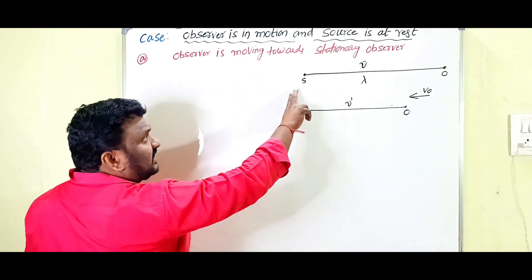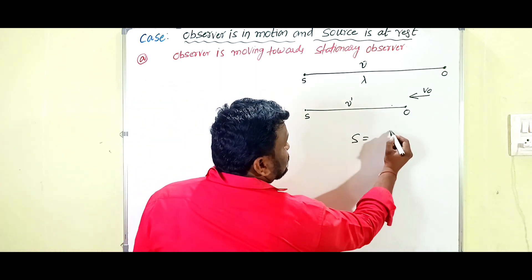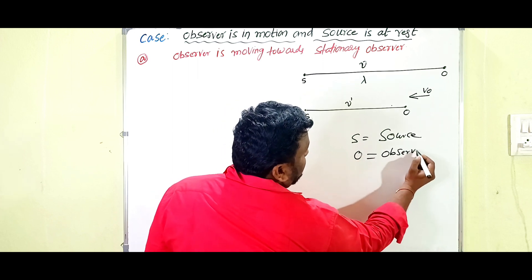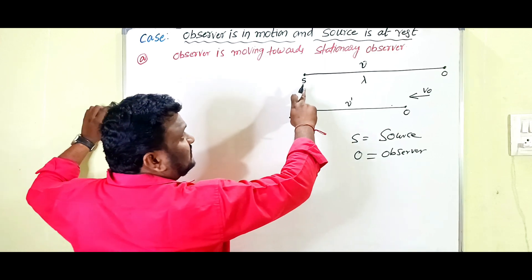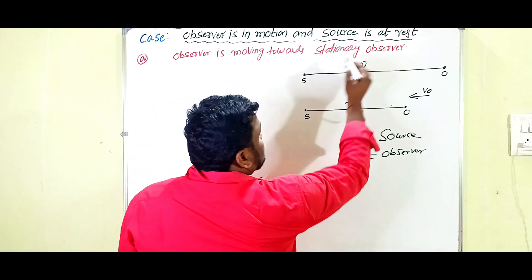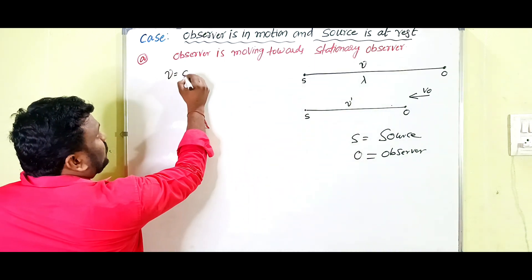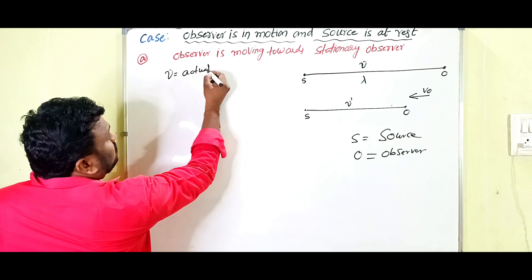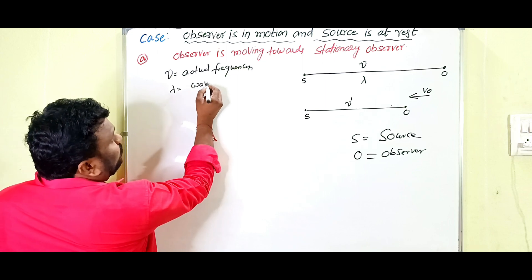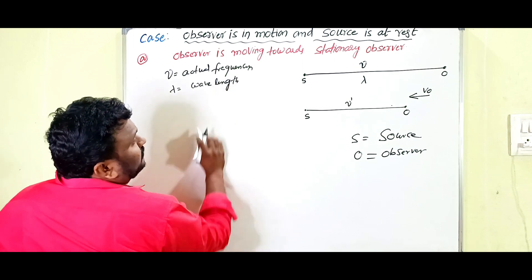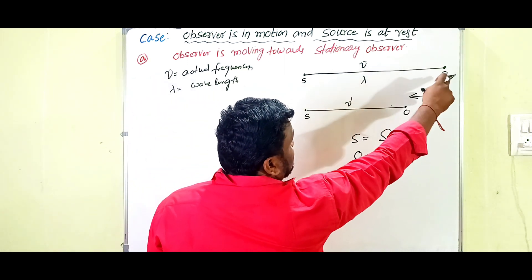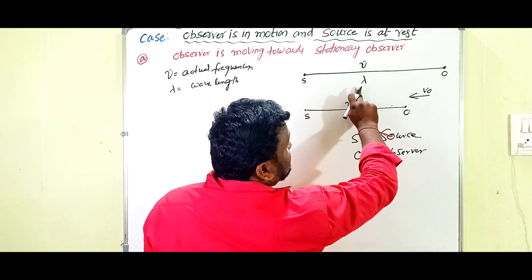Now let's look at the diagram. In the diagram, S means source — source of sound — and O means observer or listener. When the source and observer both are at rest, nu (ν) is the actual frequency and lambda (λ) is the wavelength of the sound wave. The frequency heard by the observer is nu and the wavelength is lambda.